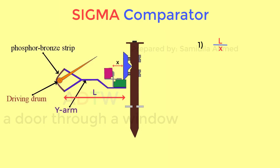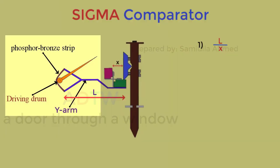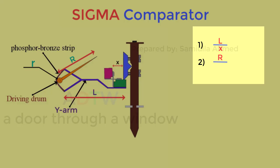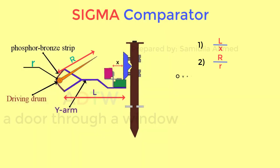The second stage of magnification is obtained with respect to pointer length R and driving drum radius r. The magnification is given by R by r. Overall magnification is given by L by X into R by r.